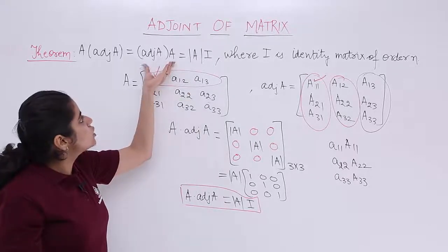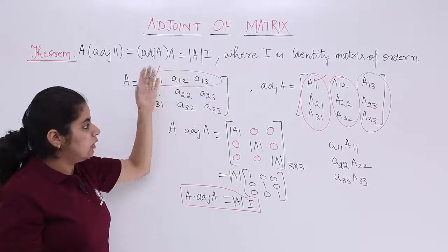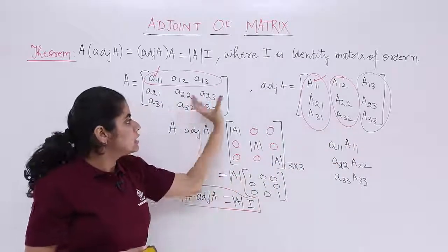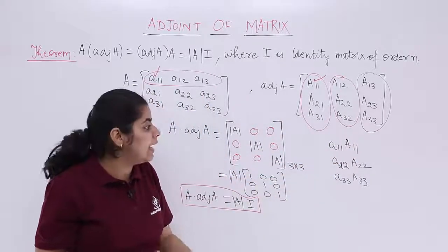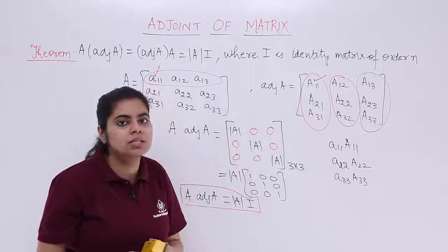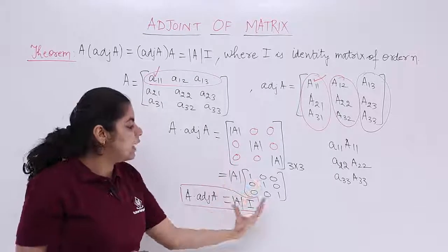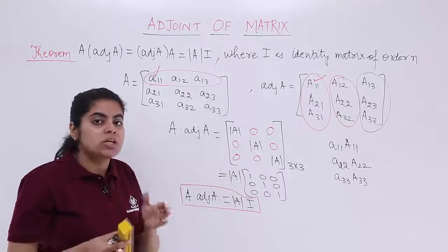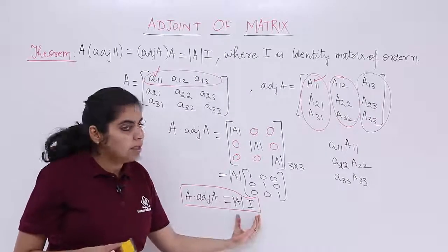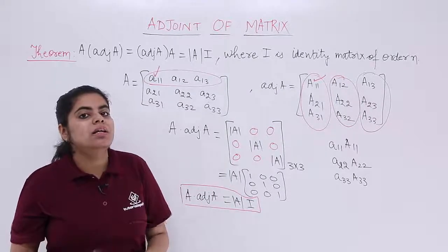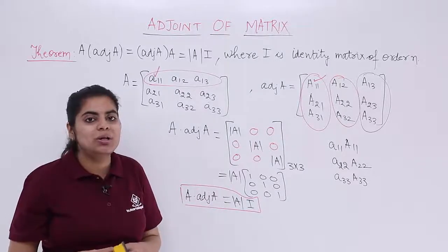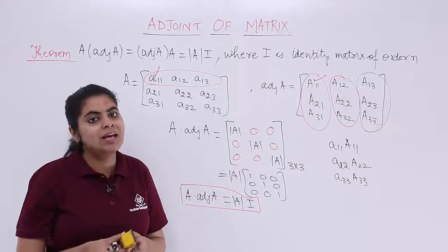Similarly, you can also solve adjoint A into A. In that case the matrices swap positions, but you will again get det(A) only for the three diagonal values, and the answer is again determinant of A into I. So in this video we saw the theorem that A into adjoint A equals adjoint A into A, both equal to determinant of A into I.